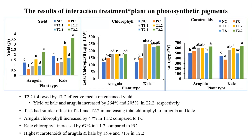As you can see in my slide, yield increased dramatically in the growing media made with mushroom compost — specifically treatments 2.2 and 1.2. Arugula yield increased by 205% and kale yield increased by 264% in treatment 2.2 compared to their respective controls.